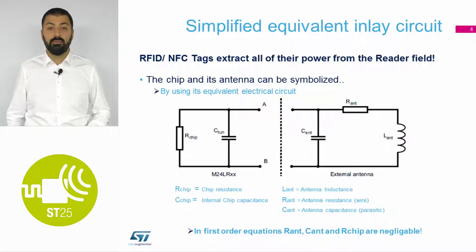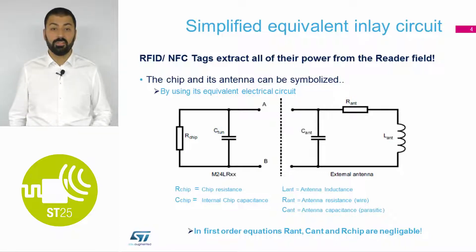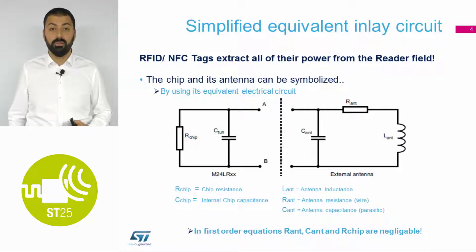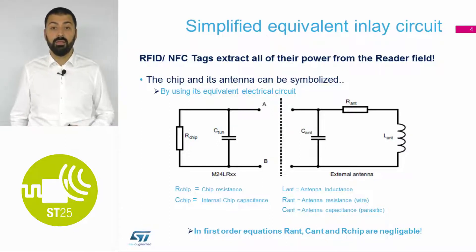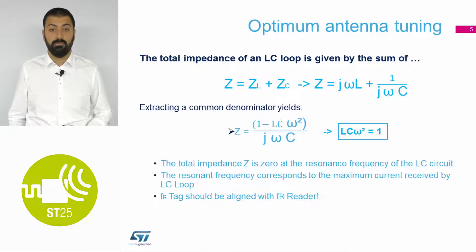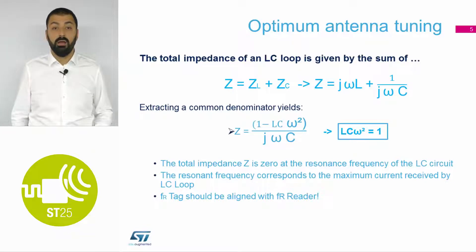If we regard the composition of an NFC antenna, it is simple — the composition of the dynamic tag and its antenna. This can be symbolized with a schematic as seen here on the slides. To simplify things, we can make the resistance of the chip and the capacitor and the resistor on the antenna side negligible. Considering the equations, we have a composition of the impedance coming from the antenna, called ZL, and the impedance from the chip, ZC.